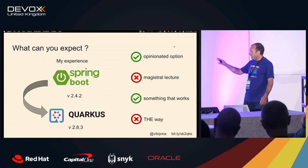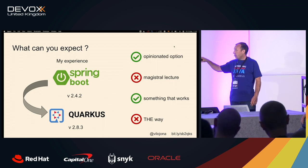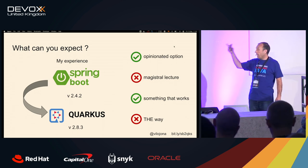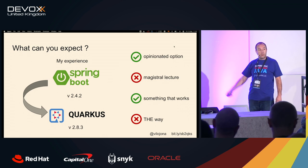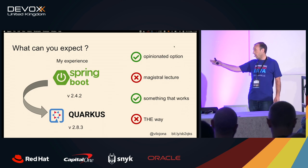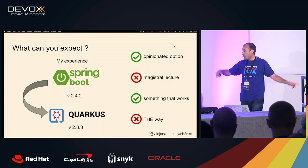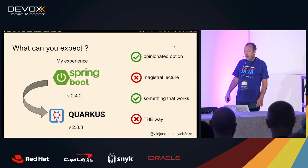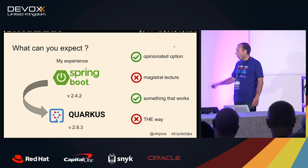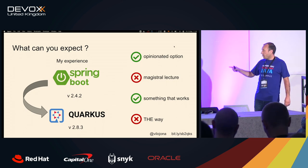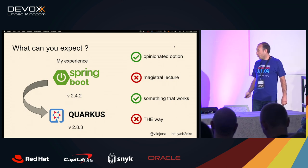These are the versions that I was using: 2.4.2 on Spring Boot, and the Quarkus version — well, it's not the last one. The last one came out two days ago, which is 2.9.0, but I used 2.8.3.